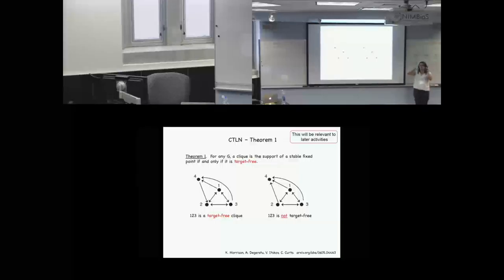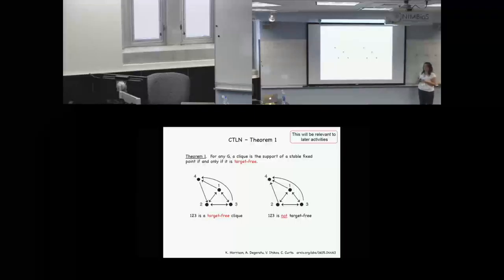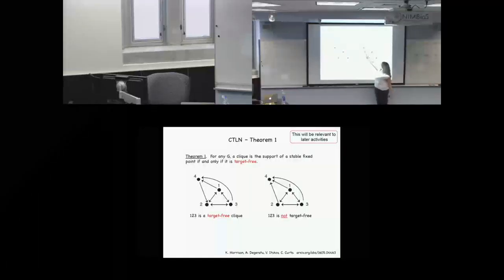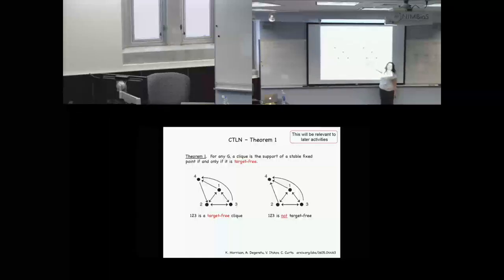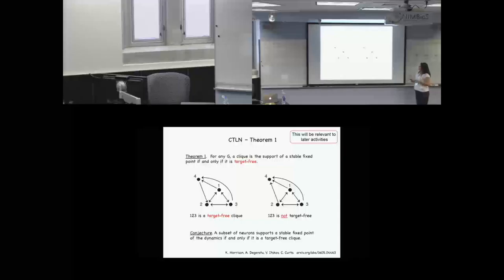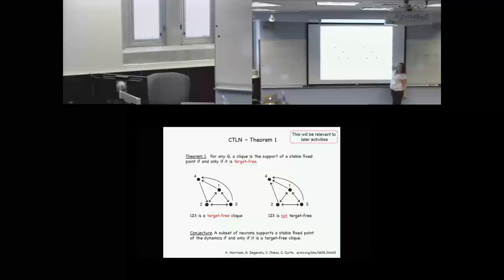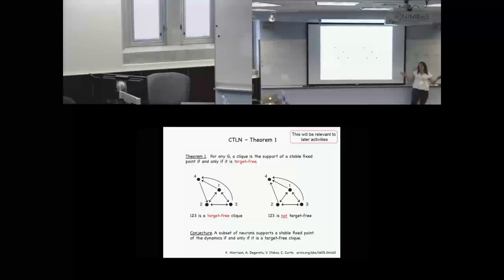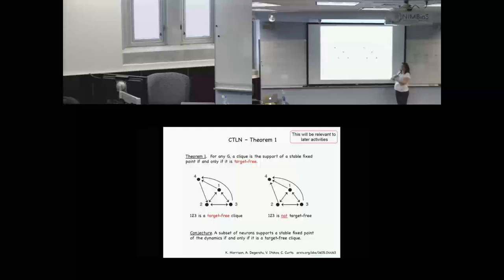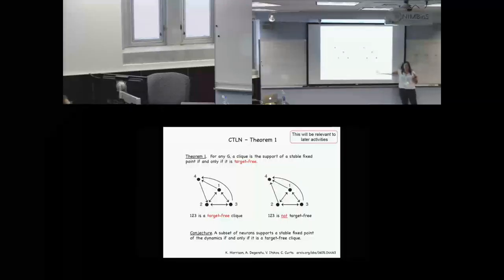It's precisely these target-free cliques that can support stable fixed points — that's why in the three-neuron example, one clique could never have a stable fixed point, because it had a target. If the connection from two to four was not there, it would be target-free — you need every neuron in the clique to be going to one particular output neuron. We actually conjecture that target-free cliques are the only stable fixed points you can have, period, because they are the only ones we have observed — but we can't prove that at this point.